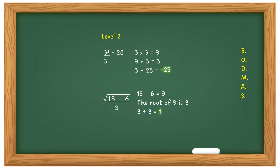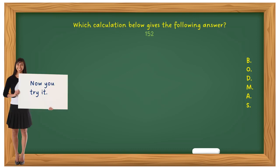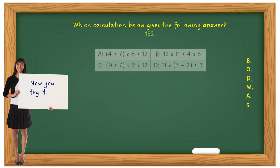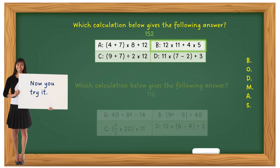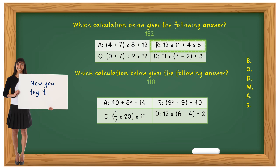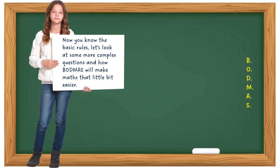Now you try it — pause the video and see how you do. Which calculation gives the answer 152? If you got answer B, well done. For the next question — don't forget to pause the video. That's a bit more complex, but just go through every option individually using your calculator — these are calculator-type questions. You'll quickly see that C is the answer. If you got B and C, well done.